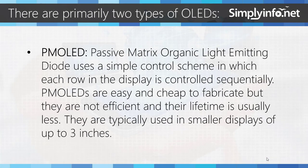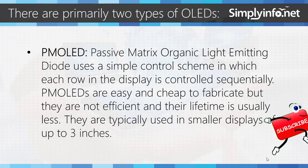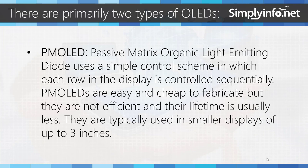There are primarily two types of OLEDs. PMOLED — Passive Matrix Organic Light Emitting Diode — uses a simple control scheme in which each row in the display is controlled sequentially. PMOLEDs are easy and cheap to fabricate, but they are not efficient and their lifetime is usually less. They are typically used in smaller displays of up to 3 inches.